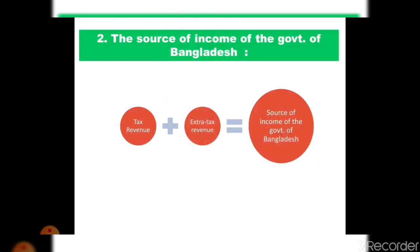The government of Bangladesh spends a huge amount of money to accomplish public welfare, in running the administration, and for socio-economic development. The government has to earn a lot of money to meet these expenses. The sources of income of the Bangladesh government can be divided into two parts: tax revenue and extra tax revenue.